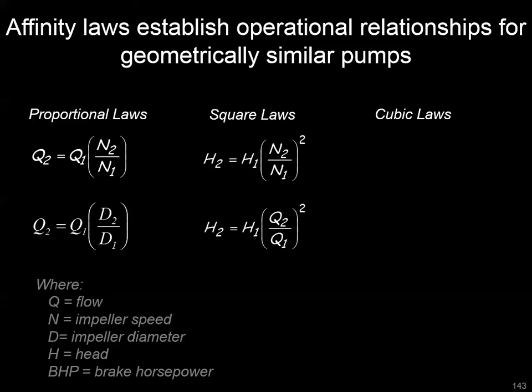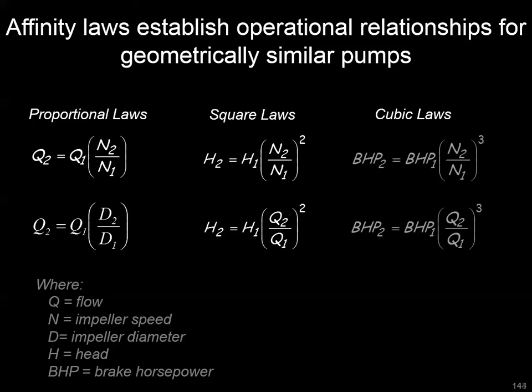There are square laws where we bring head into it. Where we have those original variables — speed, diameter, and flow change — there's a square relationship between the resulting head change. And finally, and of most note, is the brake horsepower change and the cubic relationship between those variables.